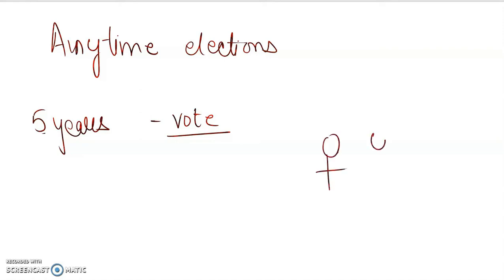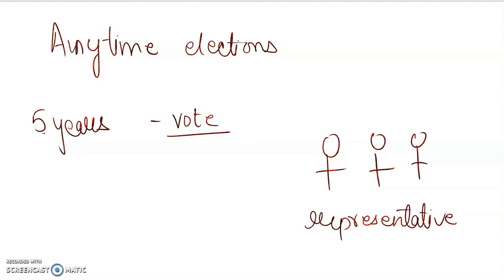Their leaders or representatives take decisions on behalf of the people. They try to understand what the people expect out of them, they try to be the voice of the people, and they try to take charge of their interests and frame laws accordingly.